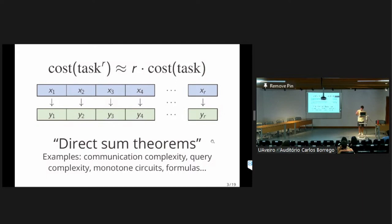Nevertheless, direct sum theorems are actually not universal. In fact, there are some computational settings that admit what I like to call a mass production phenomenon, where the cost of repeating the task many times actually does not scale linearly — it actually becomes cheaper on a per-unit basis as you increase the number of repetitions.